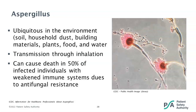Aspergillus is transmitted through inhalation and can cause death in 50% of infected individuals with weakened immune systems due to antifungal resistance. In an immunocompetent host, it can cause localized pulmonary infections if there is an underlying lung disease, allergic bronchopulmonary disease, and allergic sinusitis. In an immunocompromised or immunosuppressed host, it can cause invasive pulmonary infections and the infection can disseminate to other organs.